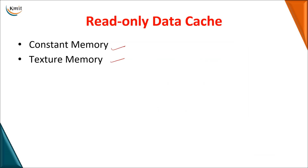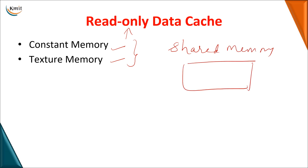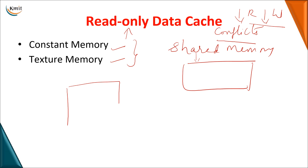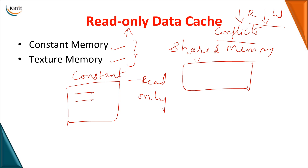Constant memory and texture memory come under the category of read-only memory. With shared memory, two or more threads — or a total block, which is a collection of threads — will be using the same memory. But there is a problem of conflicts where one operation can be a read and the other a write. To avoid these synchronization conflicts, we go for maintaining a separate memory called constant memory. This constant memory is read-only, where the stored data will not be changed in your code. Two or more threads that want to just read the data for calculations can get it from constant memory.